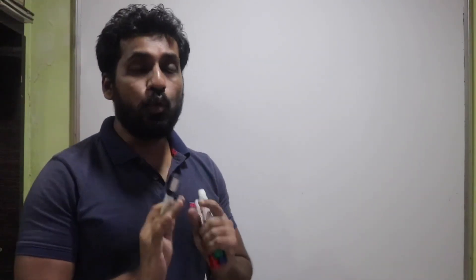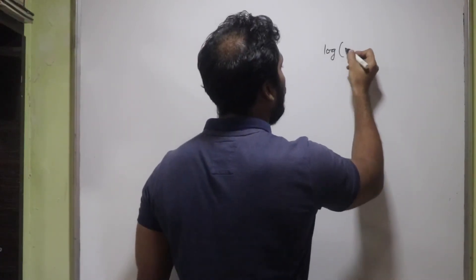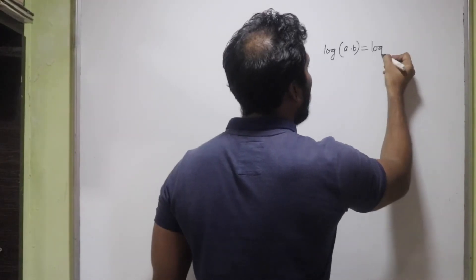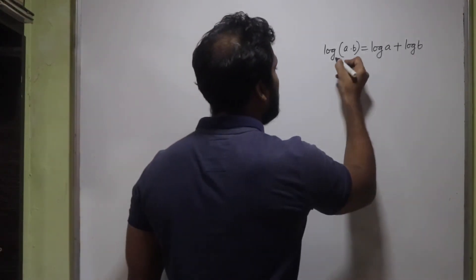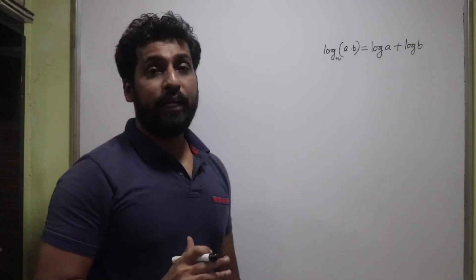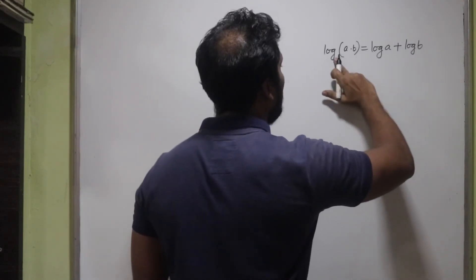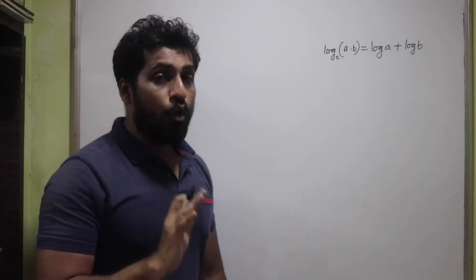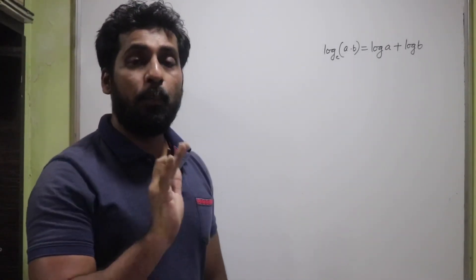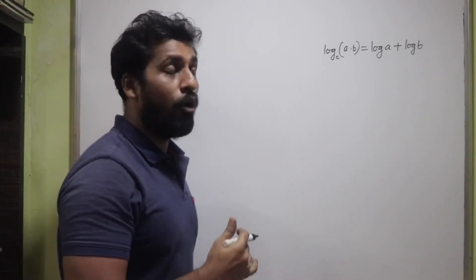For logarithmic differentiation it is mandatory that you know all the basic rules of logarithms. For instance, log(a·b) = log a + log b. Remember that in calculus, whenever we write log without specifying a base, the base is always taken as e by default.